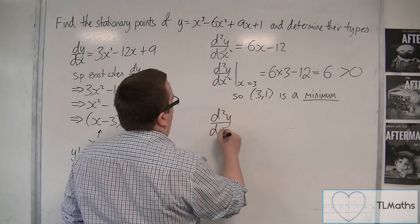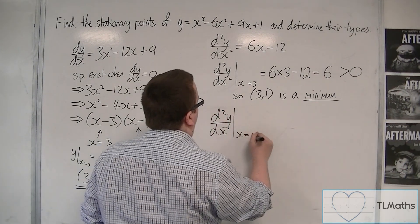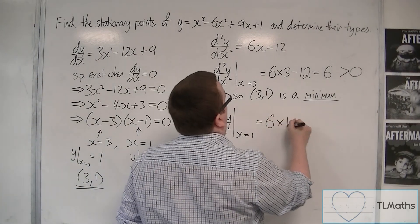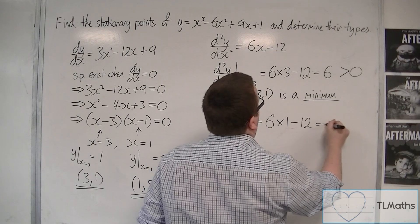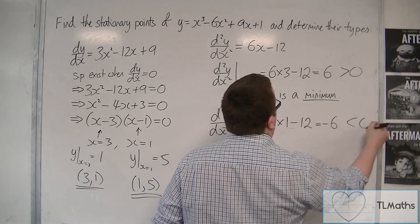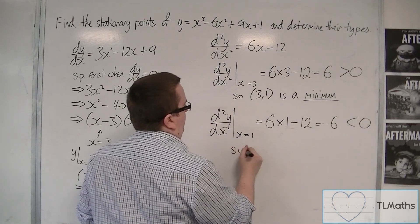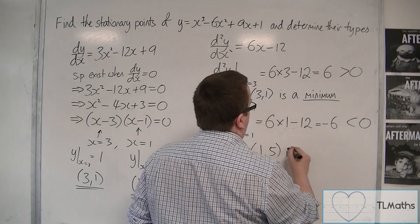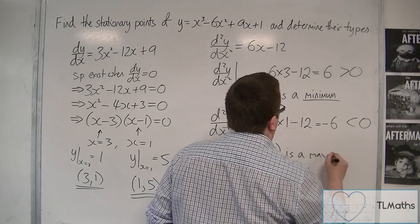Then we substitute in the second x value, so x is 1, and we get 6(1) - 12, and that actually gets us -6, and that's negative. So the coordinate (1, 5) is a maximum.